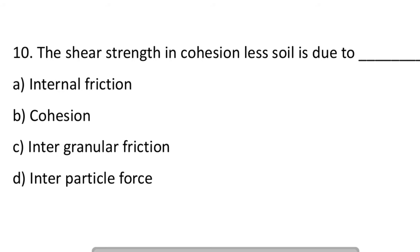Next question: the shearing strength in cohesionless soil is due to. Option A: internal friction. Option B: cohesion. Option C: intergranular friction. Option D: interparticle force. So the answer is C, intergranular friction.